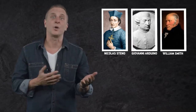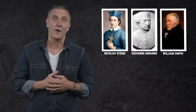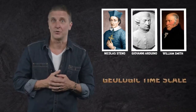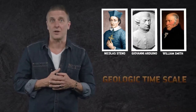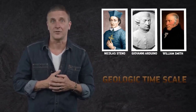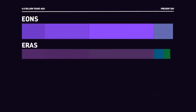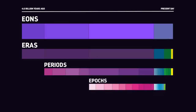Thanks to the work of early geologists like Steno, Arduino, and Smith, modern scientists have used these and other clues to create what we now call the Geologic Timescale, or GTS. The GTS has been reworked many times to reflect the latest knowledge of Earth's history, and today it's organized into five subgroups: eons, eras, periods, epochs, and ages.